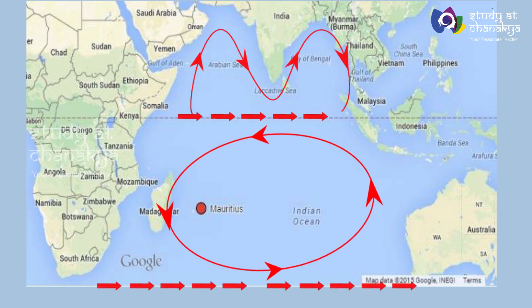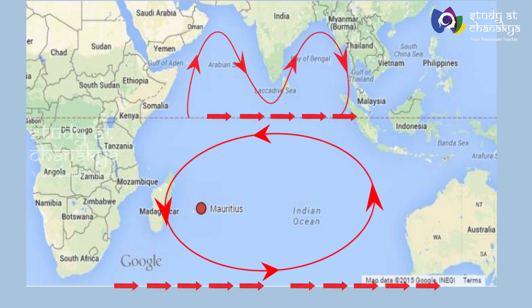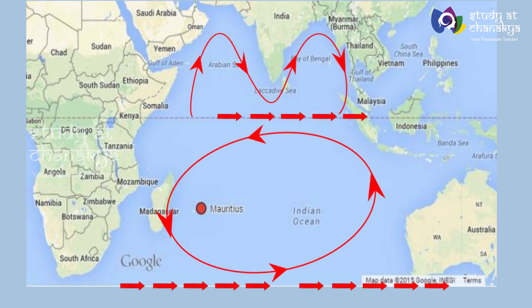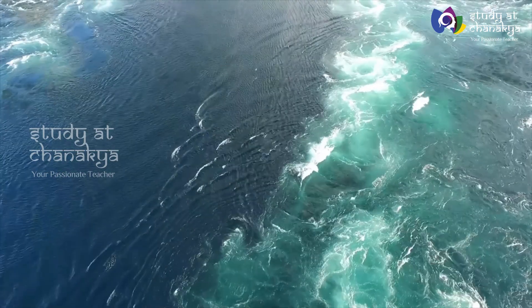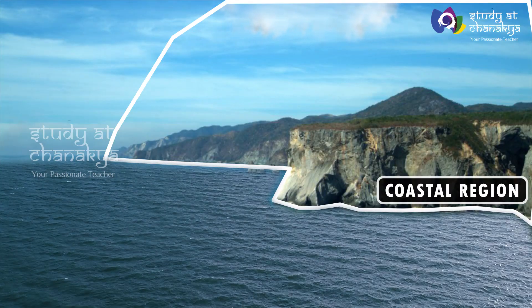Ocean currents are the continuous flow of sea water from one direction to another. They can be classified as warm currents and cold currents. Warm currents flow from tropical or subtropical regions towards polar or subpolar regions. Cold currents flow from polar or subpolar regions towards tropical or subtropical regions. We can see warm and cold currents in the map of the Indian Ocean.